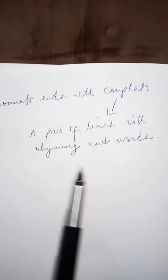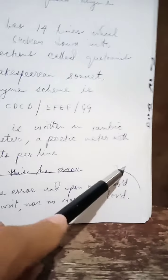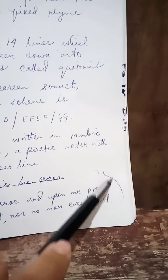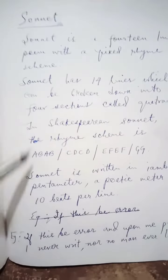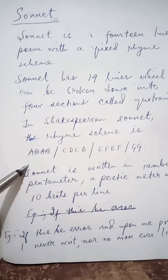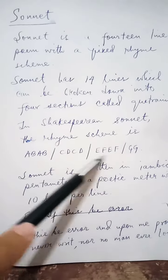What is a couplet? A couplet is a pair of lines with rhyming end words. The first section, called a quatrain, has four lines with the rhyme scheme a b a b. The second quatrain follows the same pattern.